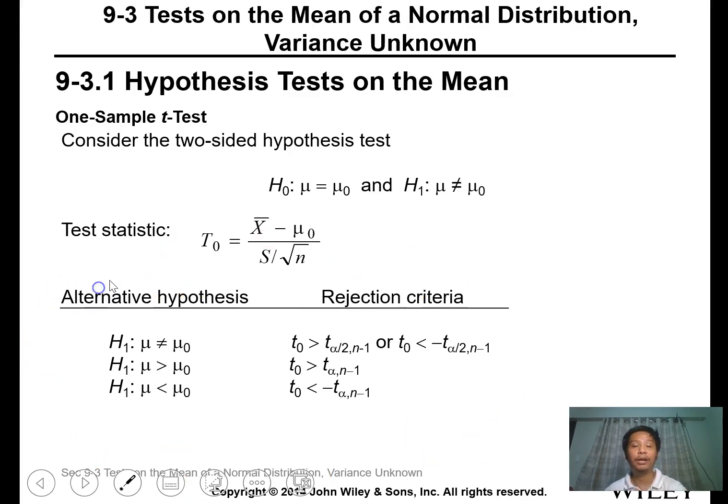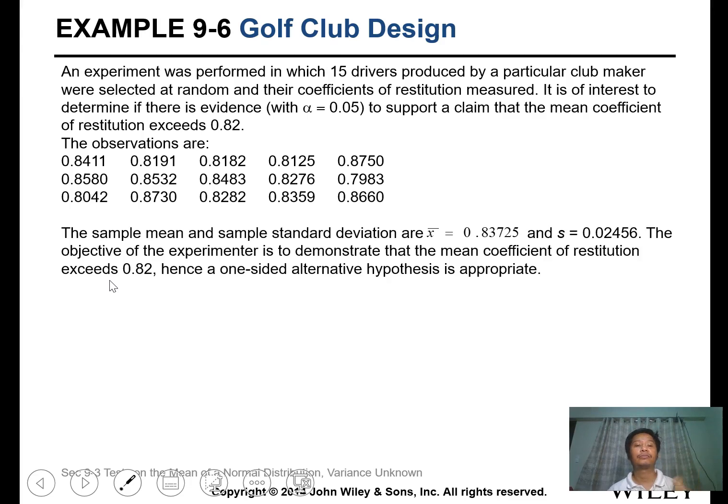The alternative and rejection criteria use the t-table. Please make sure you study your t-table. It's almost the same as the z-test. For the t-table, there's the number n and alpha at the top.